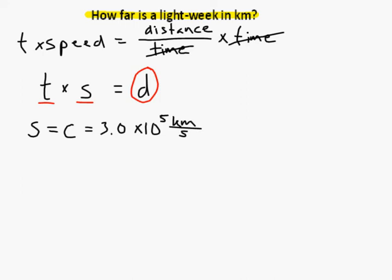In one second, light travels 300,000 kilometers. That's pretty good. Alright, so we know what to put in for the speed. What do we put in for the time? Well, how far does light go in one week? So we're going to put in one week. We've set up the equation. We know what to put in. We need to stop for a moment, though, and check our units.